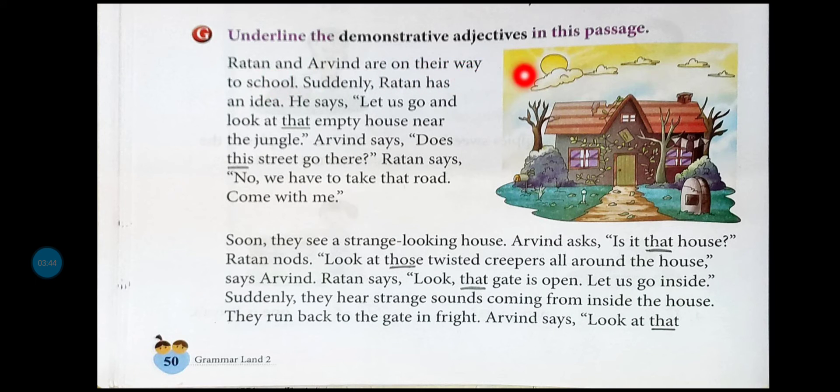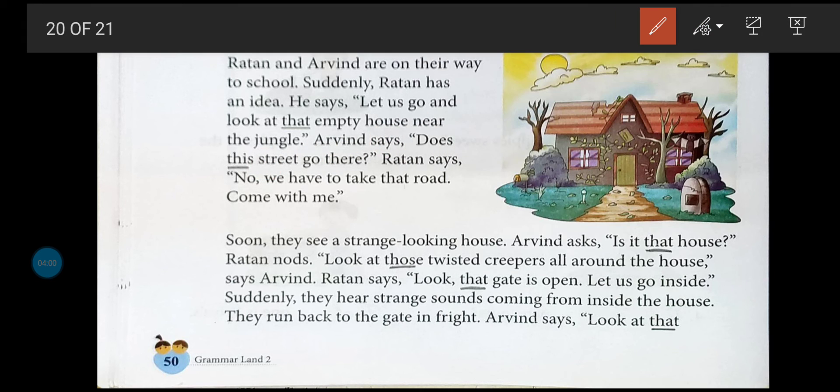Now underline the demonstrative adjectives in this passage. Ratan and Arvind are on their way to school. Suddenly Ratan has an idea. He says, 'Let us go and look at that empty house near the jungle.' यहाँ पर that जो है वो demonstrative adjective है। इसको इस तरह से आप circle या underline करेंगे जैसे teacher ने करा हुआ है। Arvind says, 'Does this street go there?' यहाँ this के नीचे underline करेंगे। Ratan says, 'No, we have to take that road.' यहाँ that के नीचे underline करना है। Come with me.